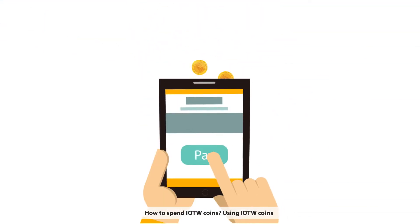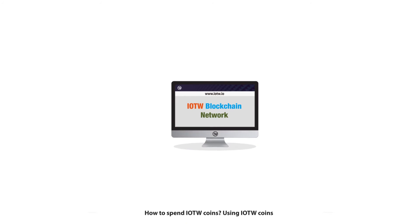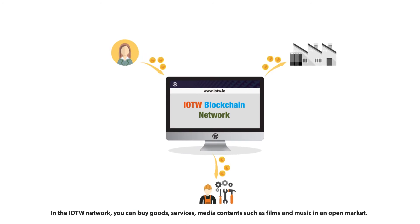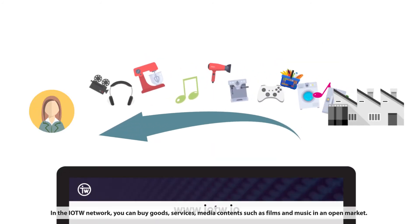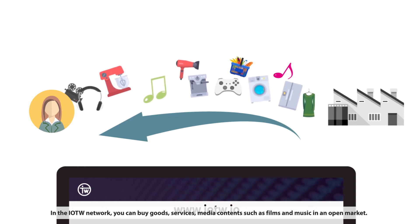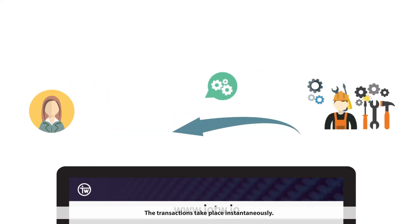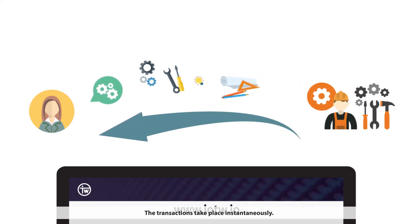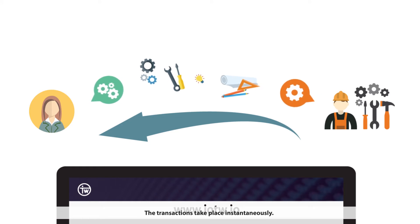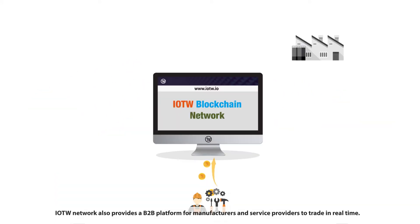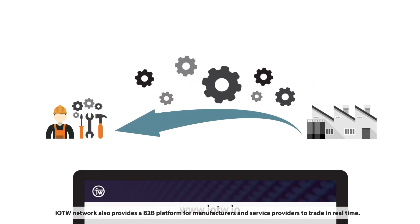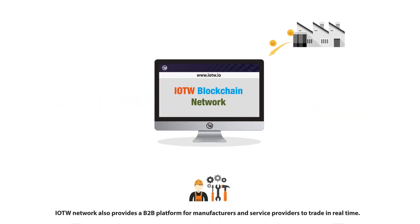How to spend IOTW coins? Using IOTW coins in the IOTW network, you can buy goods, services, and media content such as films and music in an open market. The transactions take place instantaneously. The IOTW network also provides a B2B platform for manufacturers and service providers to trade in real time.